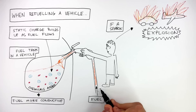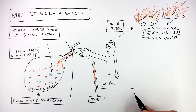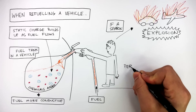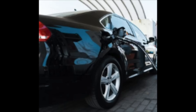When humans touch their metal cars or the pump while standing on the ground, this means they are earthed. Cars are also earthed at petrol stations because car tyres contain a type of carbon which conducts electricity, so by being in contact with the ground the car is earthed.